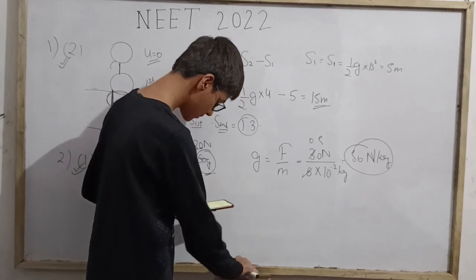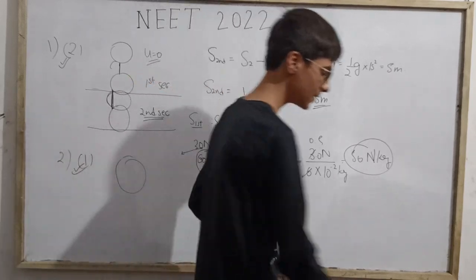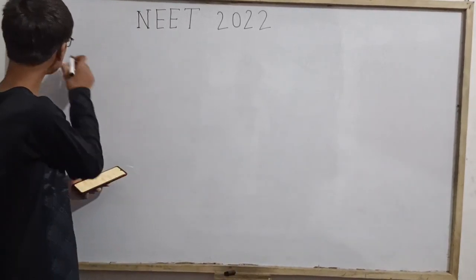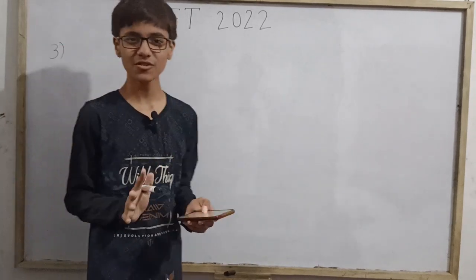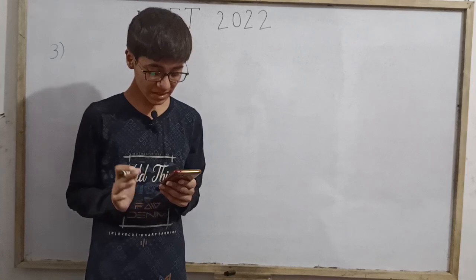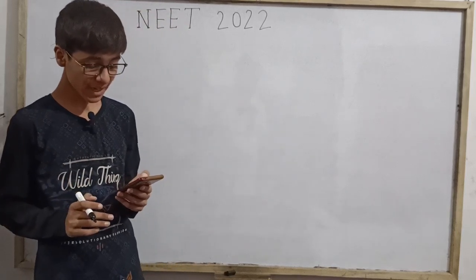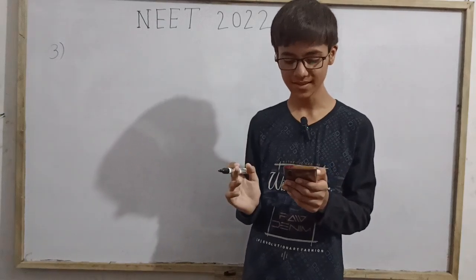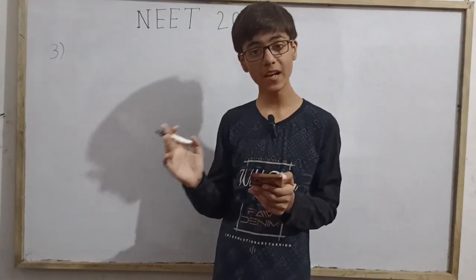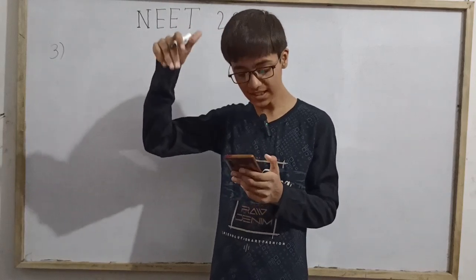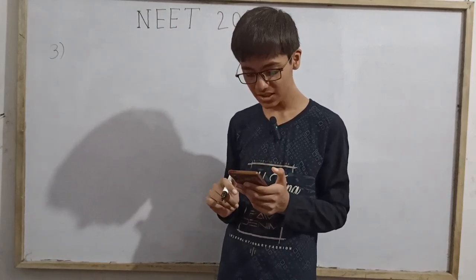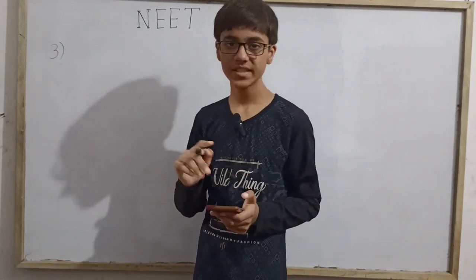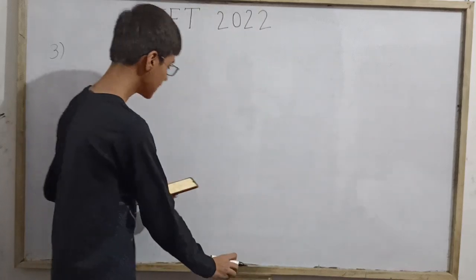The first two questions have been solved. Now let's look at the next question which is a bit better. An electric lift with a maximum load of 2000 kilogram (lift plus passengers) is moving up with a constant speed of 1.5 metre per second. The friction force opposing the motion is 3000 Newton. The minimum power delivered by the motor to the lift in watts is, given g equals 10 metre per second square.